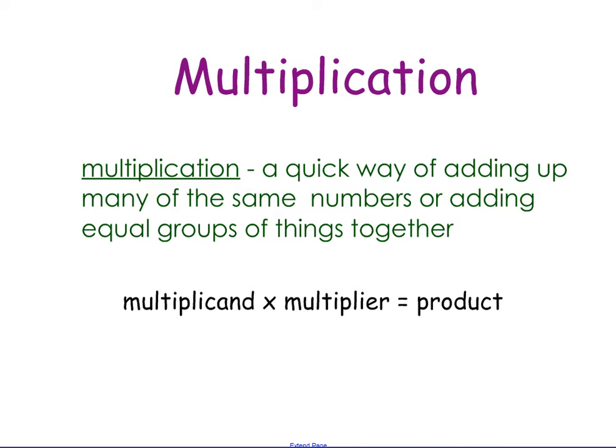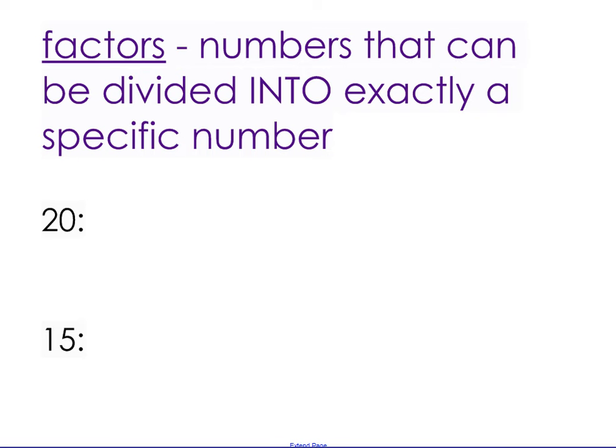Multiplication. Multiplication is a quick way of adding up many of the same numbers or adding equal groups of things together. The parts of a multiplication algorithm are multiplicand times multiplier equals product, and you will need to know the names of those parts as we work through multiplication.